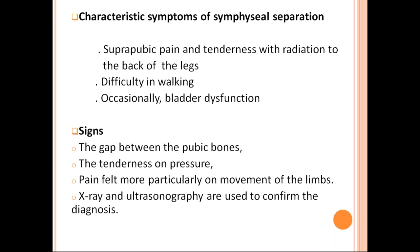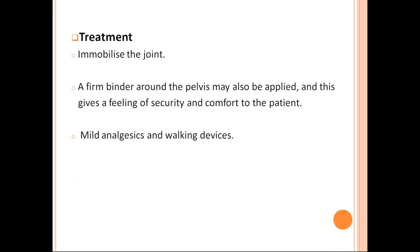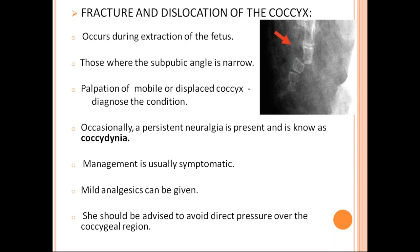Signs include a gap between the pubic bones, tenderness on pressure, and pain felt particularly on movement of the legs. X-ray and ultrasound are used to confirm the diagnosis. Treatment is simple — just immobilize the joint. A firm binder around the pelvis may be applied, giving a feeling of security and comfort. Mild analgesics and walking devices might also be advised.